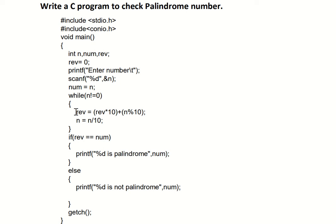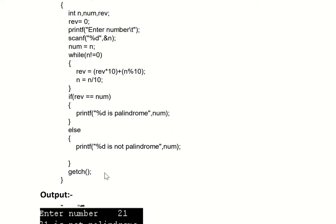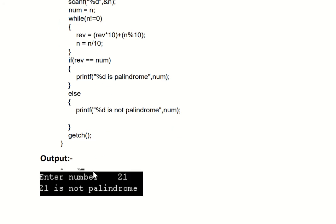We use an if condition: if reverse equals equals num. Num holds the original number, which is 121. The reverse is also 121, so the condition is true and it will print that 121 is a palindrome. Then getchar and close the bracket. In the sample output shown, we used the number 21 instead of 121. The reverse of 21 is 12, so 21 is not a palindrome number.